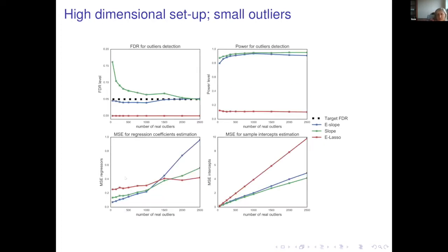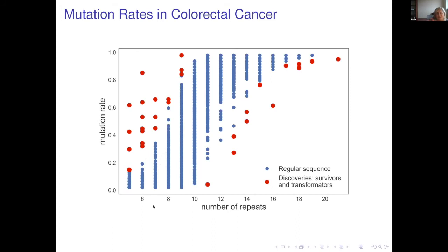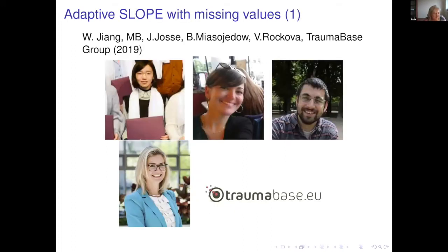A similar advantage occurs in the high-dimensional setup: we perform very well up to about 1500 outliers, which is far beyond realistic scenarios, so in practice we are in the favorable left side of the spectrum. We also have a real data example identifying repetitive DNA sequences related to colorectal cancer by identifying sequences whose mutation rates were larger or smaller than predicted by the model.